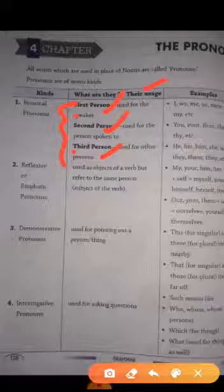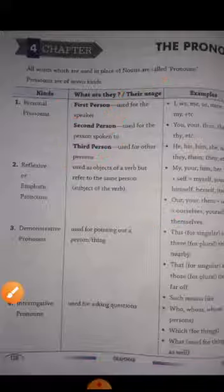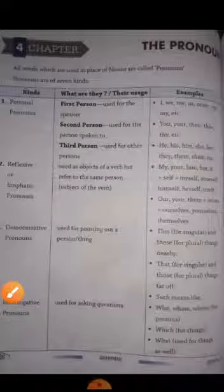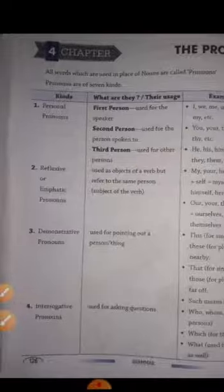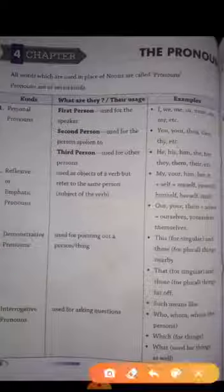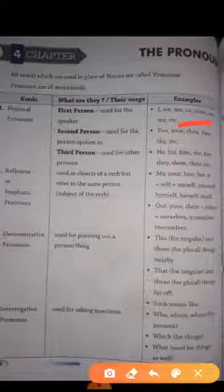Third person wo hote hain jiske vishay mein baat ki ja rahe hain. Jho topic ho ta hain. So we will see the examples how we use the pronouns. I, we, me, us, mine, my, etc. are personal pronouns.